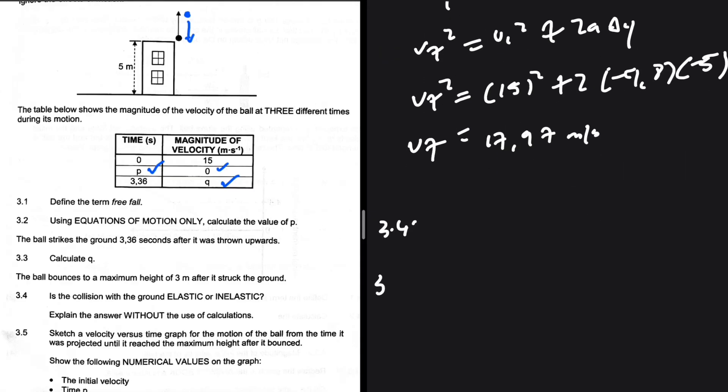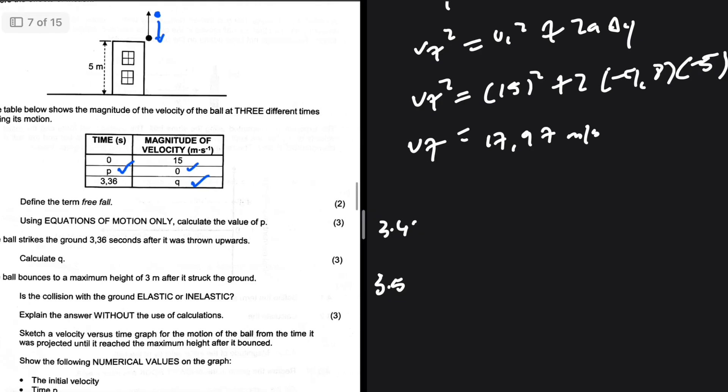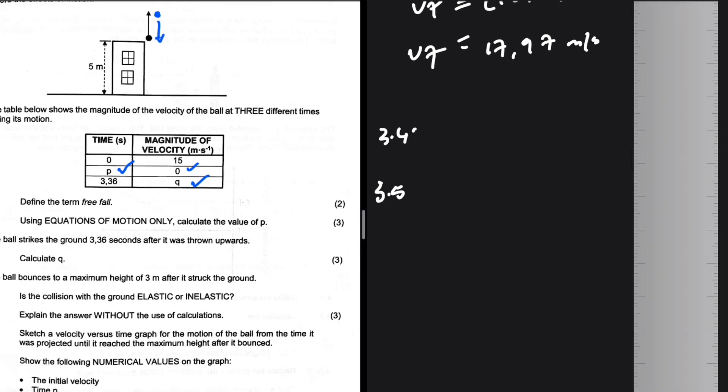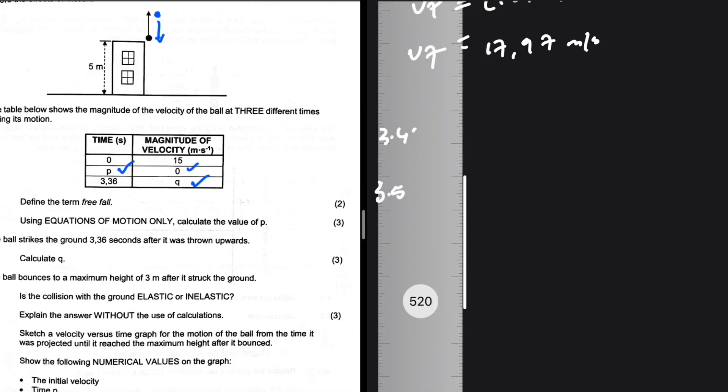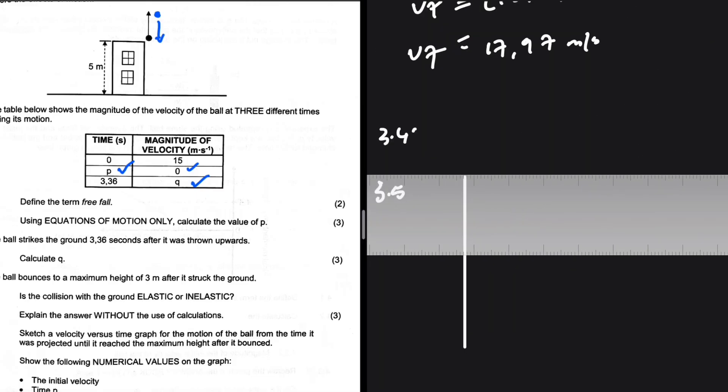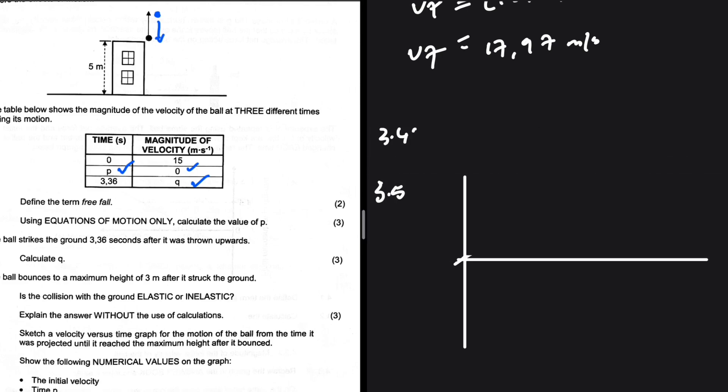If you had the course, I don't see any reason why you should get anything wrong. 3.5: Sketch a velocity versus time graph for the motion of the ball from the time it was projected until it reached the maximum height after it bounced. Let me just have my axis, and then I'm going to make sense of the equation and have the velocity-time graph. From the time it was projected until it reached maximum height after it bounced.